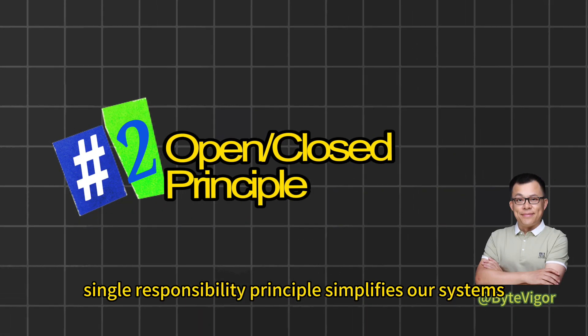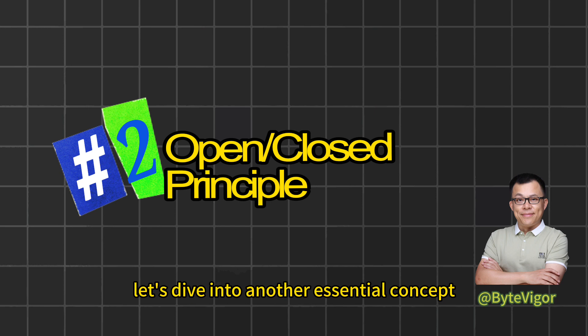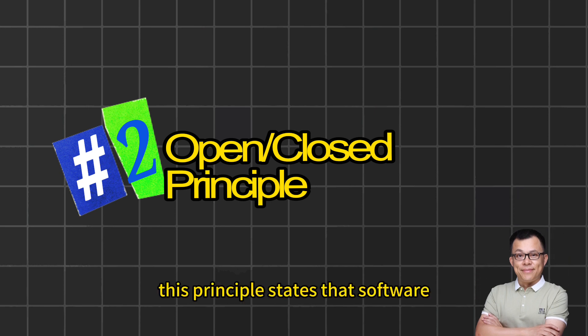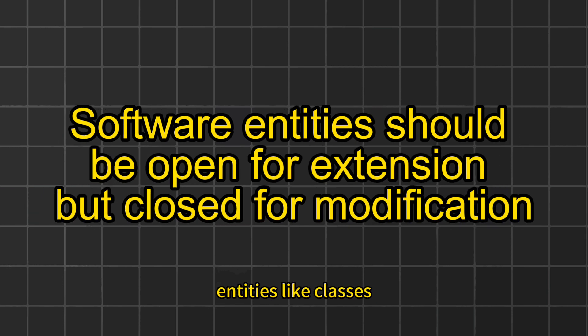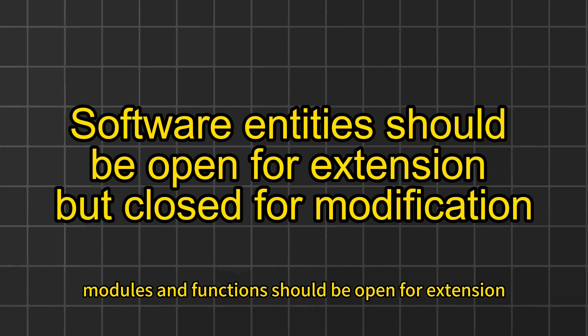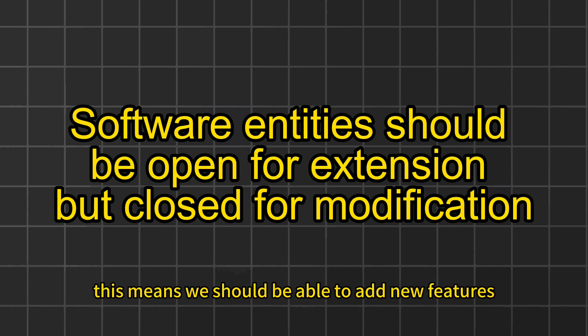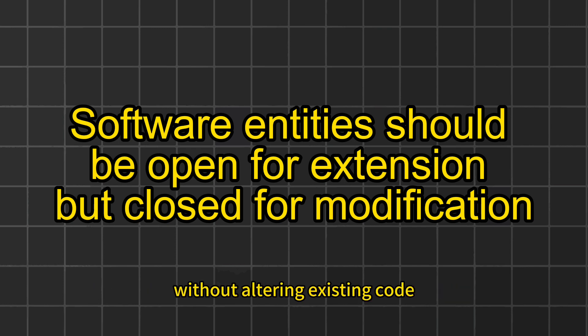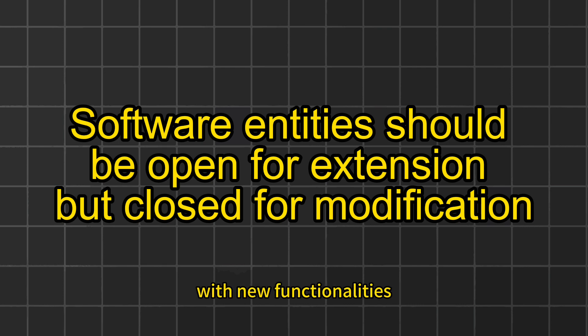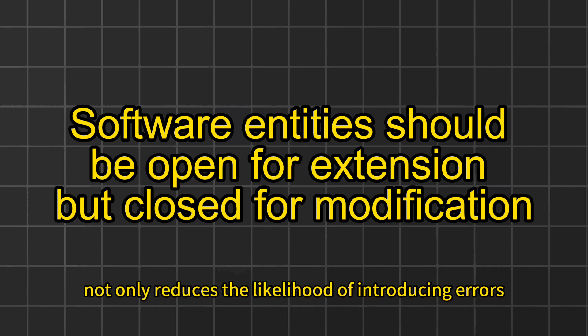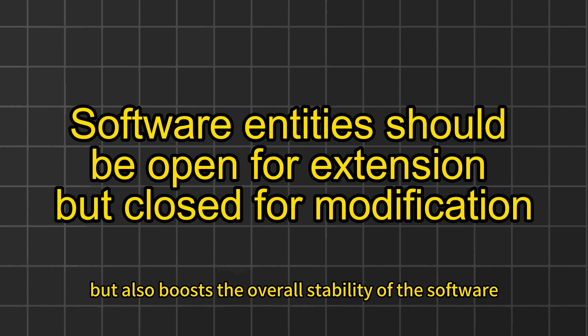Having explored how the Single Responsibility Principle simplifies our systems, let's dive into another essential concept, the Open-Closed Principle. This principle states that software entities like classes, modules, and functions should be open for extension, but closed for modification. In simpler terms, this means we should be able to add new features without altering existing code. It allows us to enhance our systems with new functionalities without disrupting what already works, which not only reduces the likelihood of introducing errors, but also boosts the overall stability of the software.